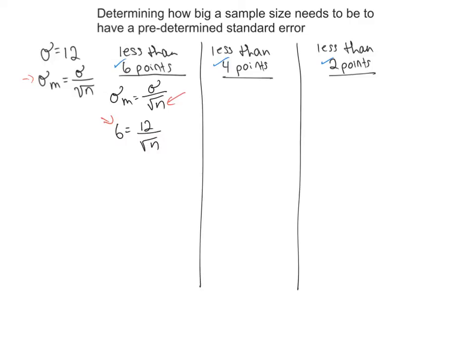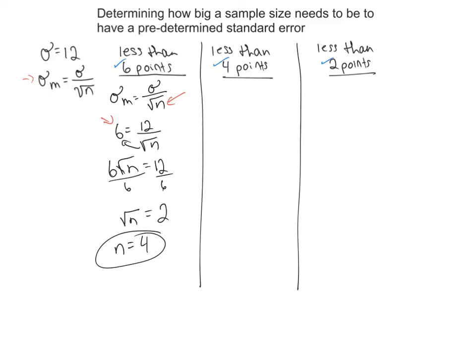Let's manipulate this formula. Bring the square root of n over to this side — we're just turning a division equation into a multiplication equation. So we get 6 times the square root of n equals 12. Divide both sides by 6, and the square root of n equals 2. Squaring both sides gives us n equals 4.